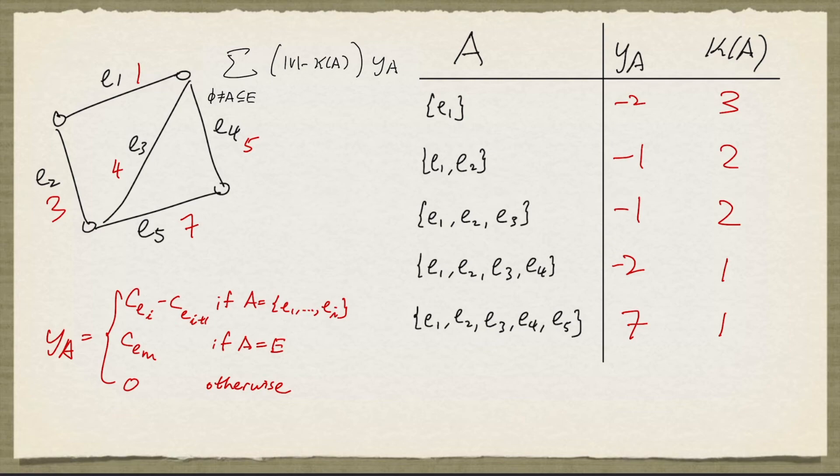And if we take a spanning tree returned by Kruskal's algorithm, we would have e1, e2, and e4. And the weight of this tree is 1 plus 3 plus 5, and that's 9.